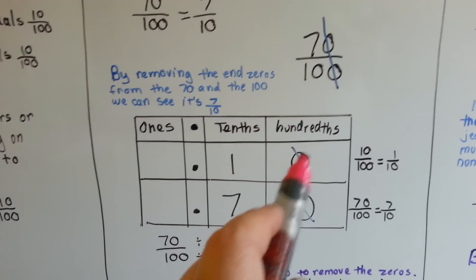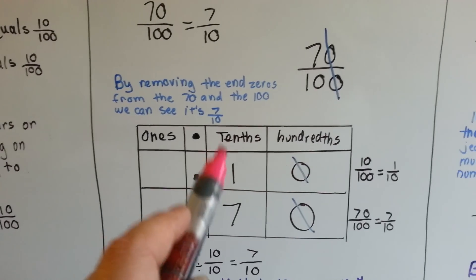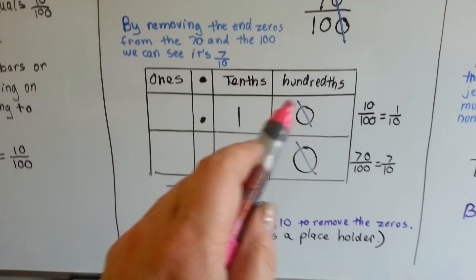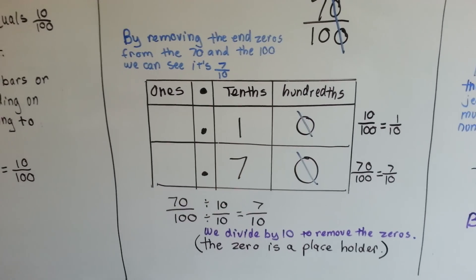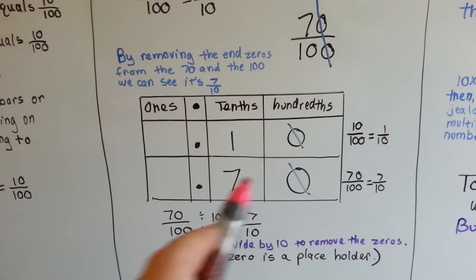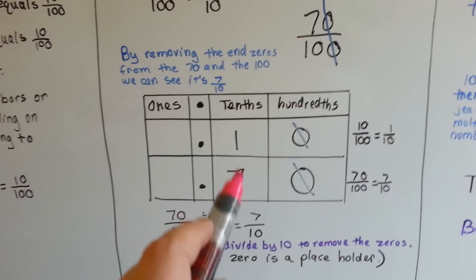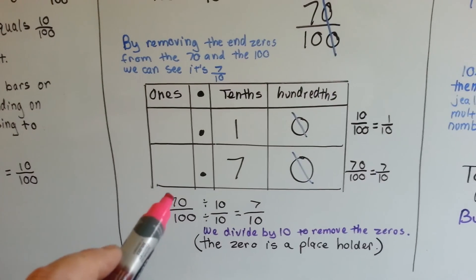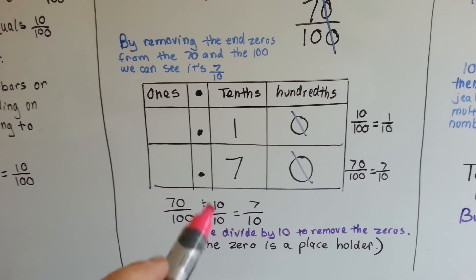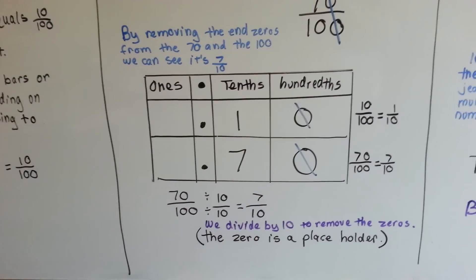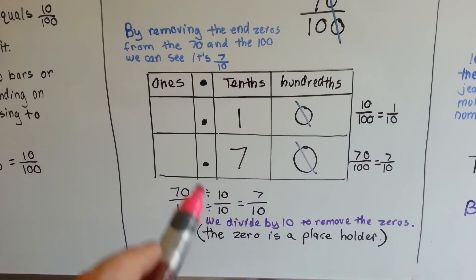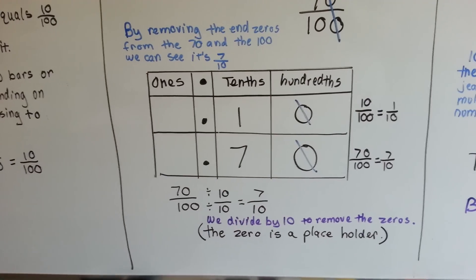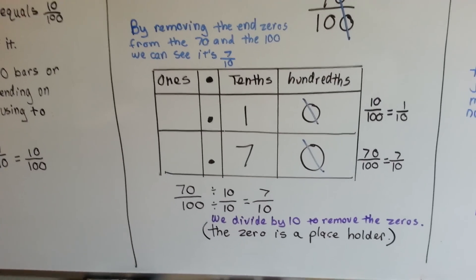Ten one hundredths is really one tenth and zero hundredths. The zero is just a placeholder. Seventy one hundredths is seven tenths and zero hundredths. If we divide the seventy and the one hundred by ten, we can see how we got to seven tenths. If we divide the numerator and the denominator by ten, we can remove those zeros. They're just placeholders.